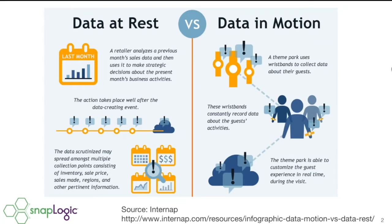First, we want to talk about the concept of data at rest versus data in motion. There's certainly a lot of buzz around this. A good example of data at rest is a retailer who analyzes the previous month's sales data to make strategic decisions about the current month — very much a backward-looking view. Traditional data warehousing and traditional business intelligence are good examples of data at rest.